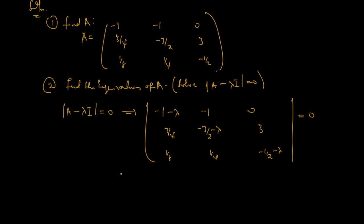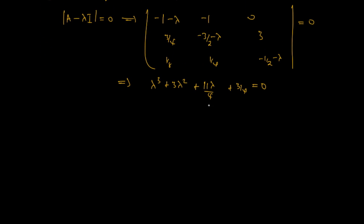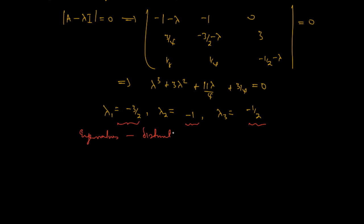Finding the determinant of this 3×3 matrix, what we get is λ³ + 3λ² + (11λ/4) + (3/4) = 0. Using a calculator to solve this cubic equation, we get λ₁ = −3/2, λ₂ = −1, and λ₃ = −1/2. We observe that all three eigenvalues are distinct.